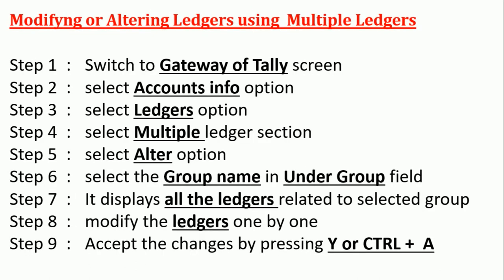Now, to alter multiple ledgers: Step one, switch to Gateway of Tally screen. Step two, select Accounts Info menu. Step three, select Ledgers option. Step four, select Multiple Ledger section. Step five, select Alter option. Step six, select the group name in the Under Group field. Step seven, it displays all the ledgers related to the selected group. Then we can modify any ledger names or cancel any ledgers. Step eight, accept the changes by pressing Y or Ctrl+A. Now we will see a demo on all these concepts — creating, displaying, and modifying ledgers.